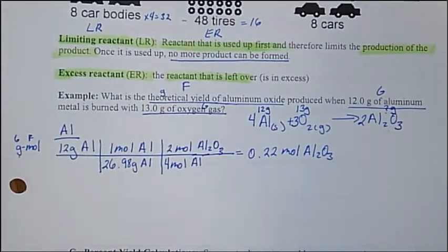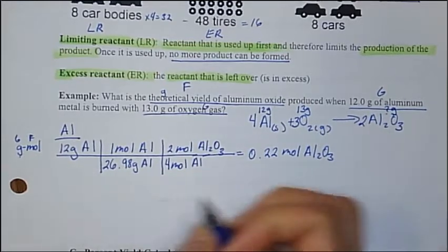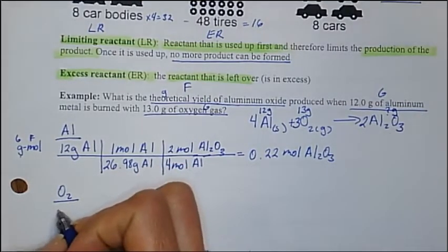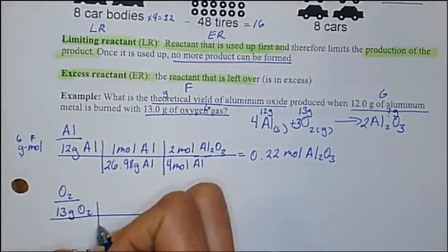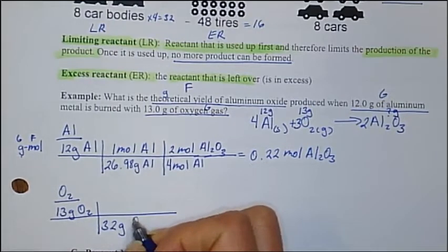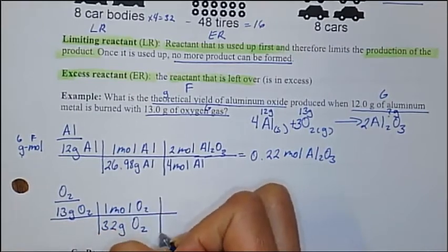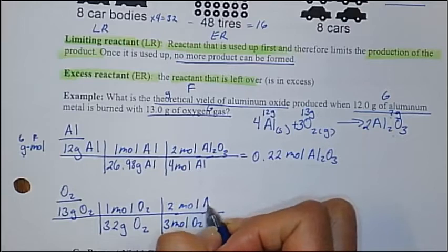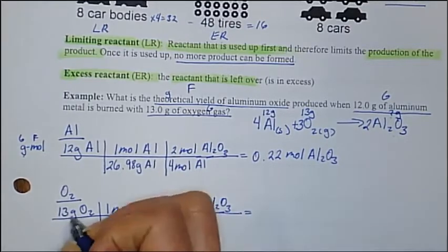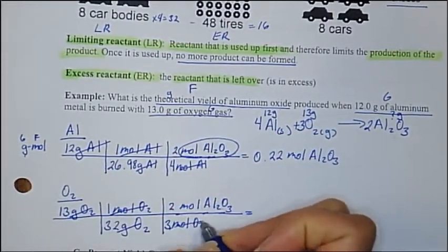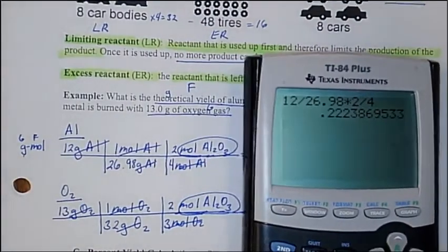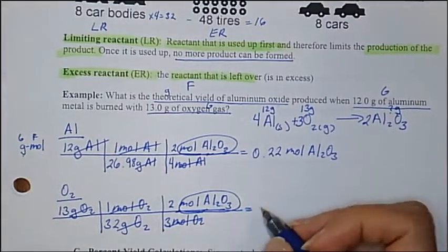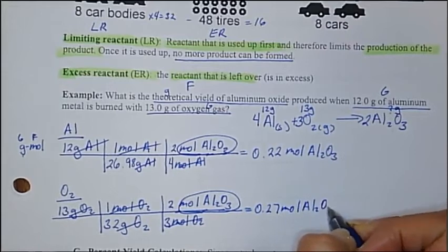Now let's find the moles for oxygen. We're given 13 grams of oxygen. Oxygen — don't forget — it is 32 grams per mole because it is O₂. And from my equation, it's 3 moles of oxygen to every 2 moles of aluminum oxide. Plugging into the calculator: 13 divided by 32 times 2 divided by 3, and I get 0.27 moles of aluminum oxide.